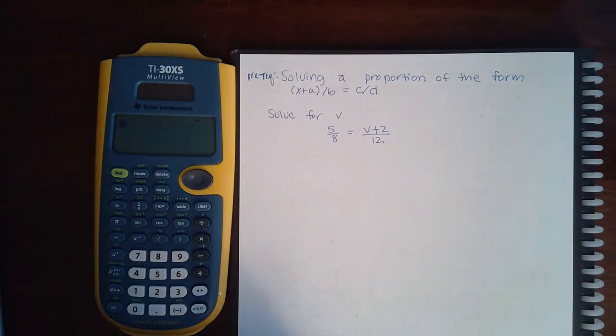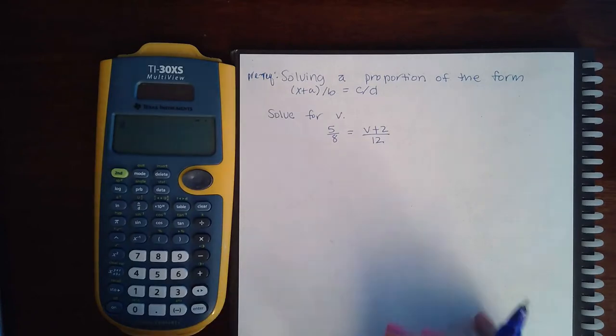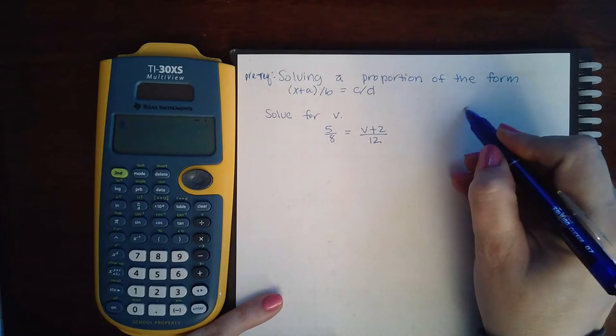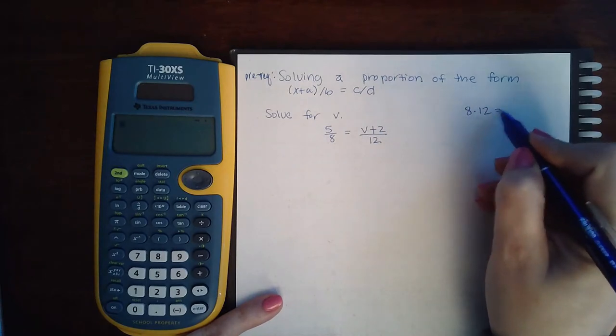Here we have a prerequisite topic: solving a proportion of the form (x+a)/b = c/d. Same technique as solving any equation - you find a common denominator. If I multiply those two together, I can use 72 or 96.